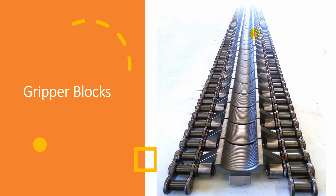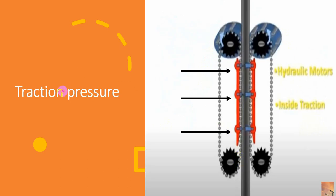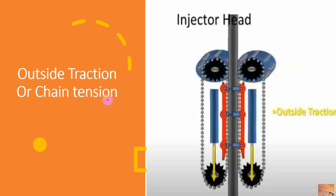This is the final picture of a chain with gripper blocks. The traction pressure pushes against the skate bar; the skate bar pushes against the rollers; then the chain with gripper blocks finally grips the coiltube. This is called inside traction or traction pressure. Outside traction — or chain tension — is produced by cylinders pushing against the idle sprockets to keep the chain in tension.